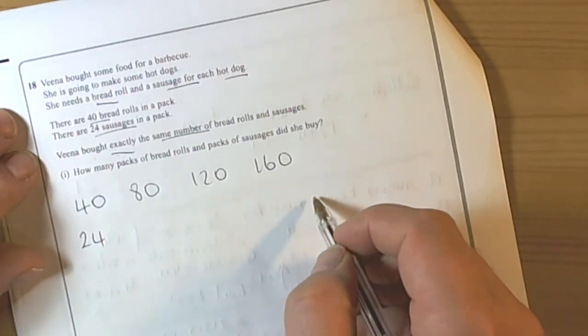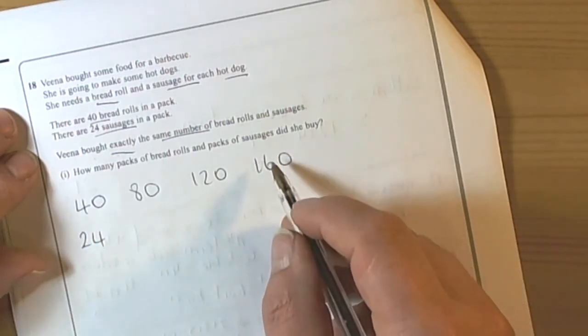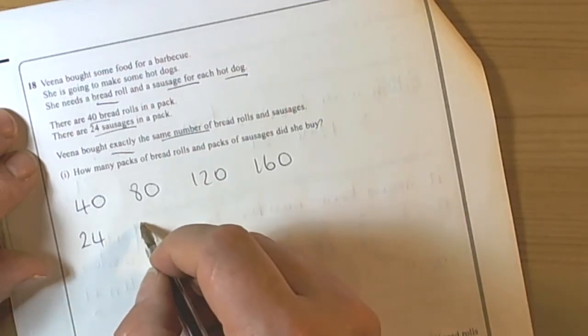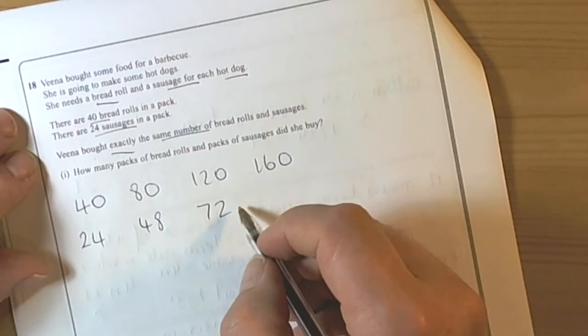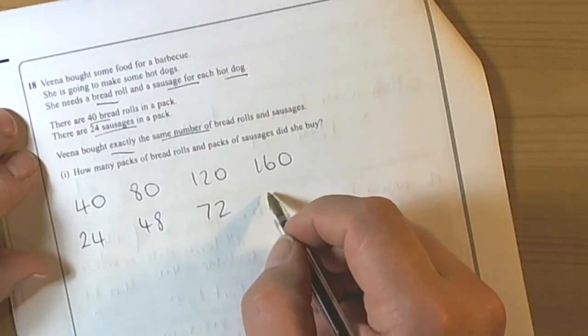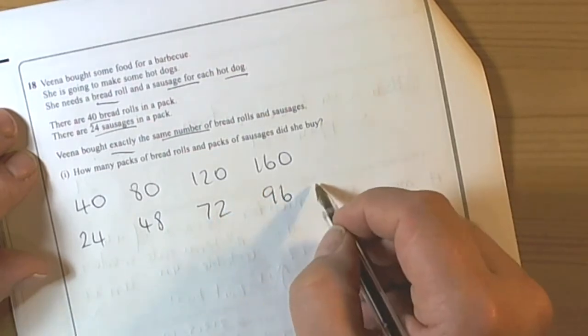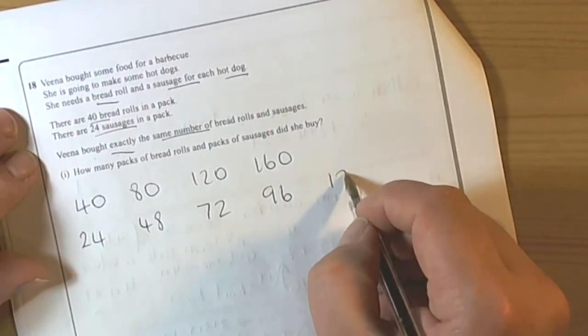Then when we find we've got the same number we know we've got the same number of sausages and bread rolls. So 24, 48, 72, keep adding 24 so add 20 then add 4 so 92, 96, add 20, 116, add 4, 120.